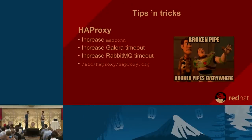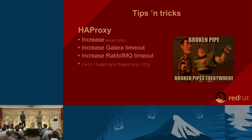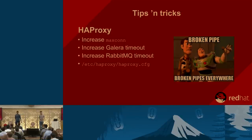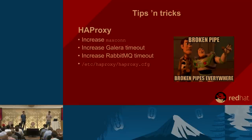We use HAProxy as a load balancer, but this applies to all load balancers. It sounds simple but it's easy to forget: you need to set the max connection parameters and timeouts in alignment between your load balancer and your backend. For example, if you have a very high timeout set on Galera but a very low timeout on HAProxy, HAProxy will become the bottleneck of your backend. To avoid a lot of broken pipes, pay close attention to these settings.